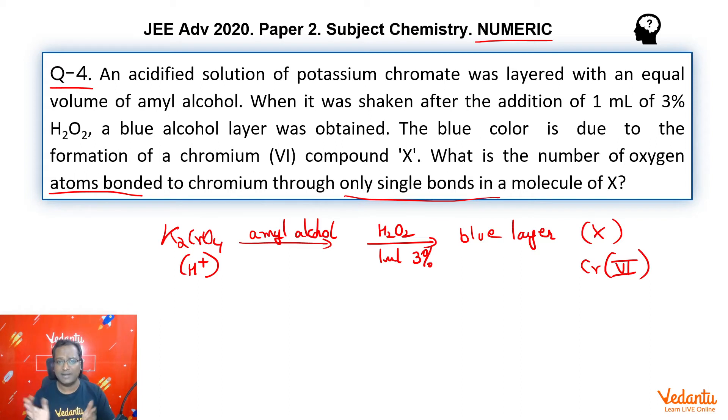This is standard theory that we cover almost everywhere, that when we take chromate in H2O2 acidic medium, it forms butterfly shaped CrO5 unstable compound.